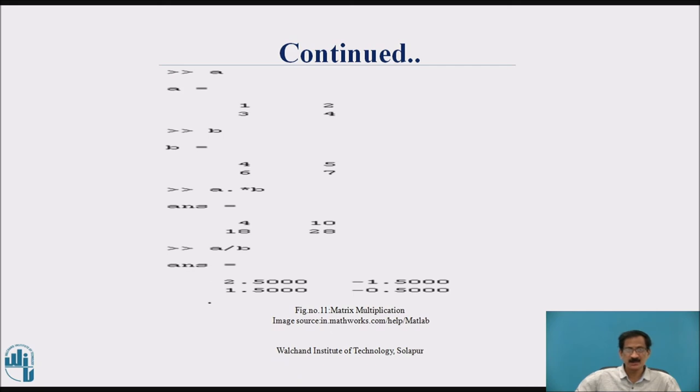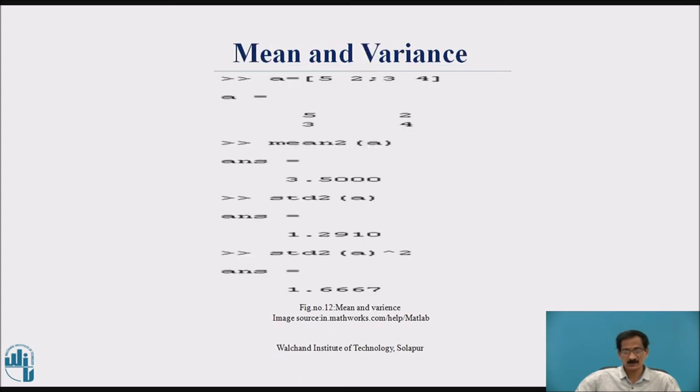Again similarly division a divided by b. This is the mean: a is equal to 5, 2, 3, 4. Mean of a, the answer is 3.5.